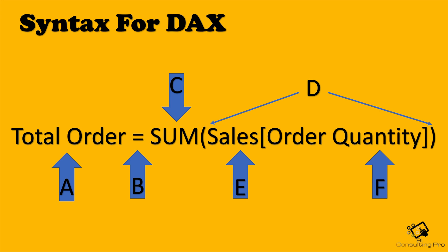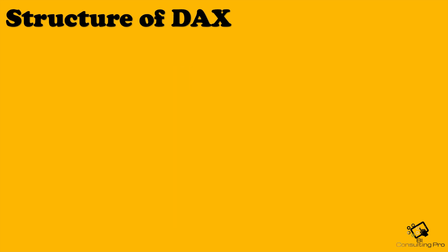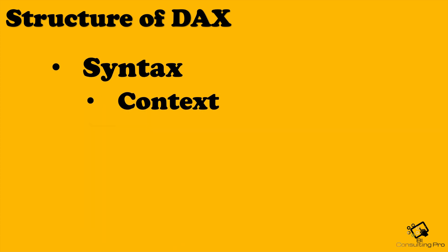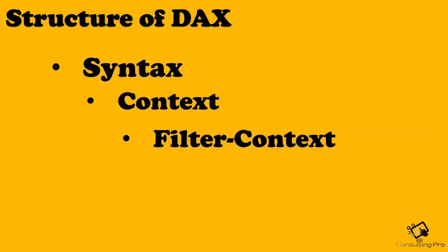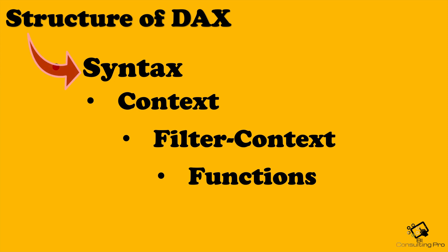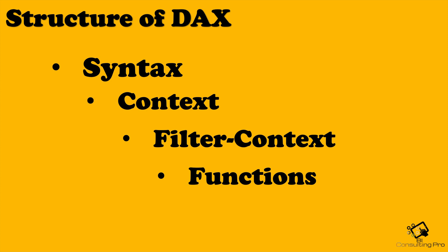Now let's consider the structure of DAX. DAX consists of syntax, context, filter context, and functions. In syntax, we show how a formula is written and what components make it up. Context is one of the most important DAX concepts. When we speak of context, it may refer to one of two types: row context or filter context. Filter context is a little more difficult to understand than row context, but it is used to filter the data.